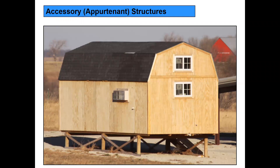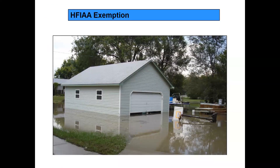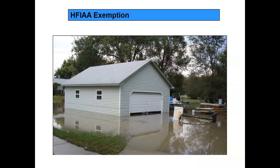Here's an elevated shed — it's got an air conditioner unit and probably a workbench inside. You'd need an elevation certificate to document the elevation of the machinery, equipment, and floor relative to the base flood elevation. Here's a detached garage — there's a regulation in the Homeowner's Flood Insurance Affordability Act that says a detached garage on a residential property can be exempted from mandatory flood insurance as part of a bank loan. However, as floodplain managers, if someone is building a garage in your floodplain, you still need a permit and proof it's built in compliance with your regulations.